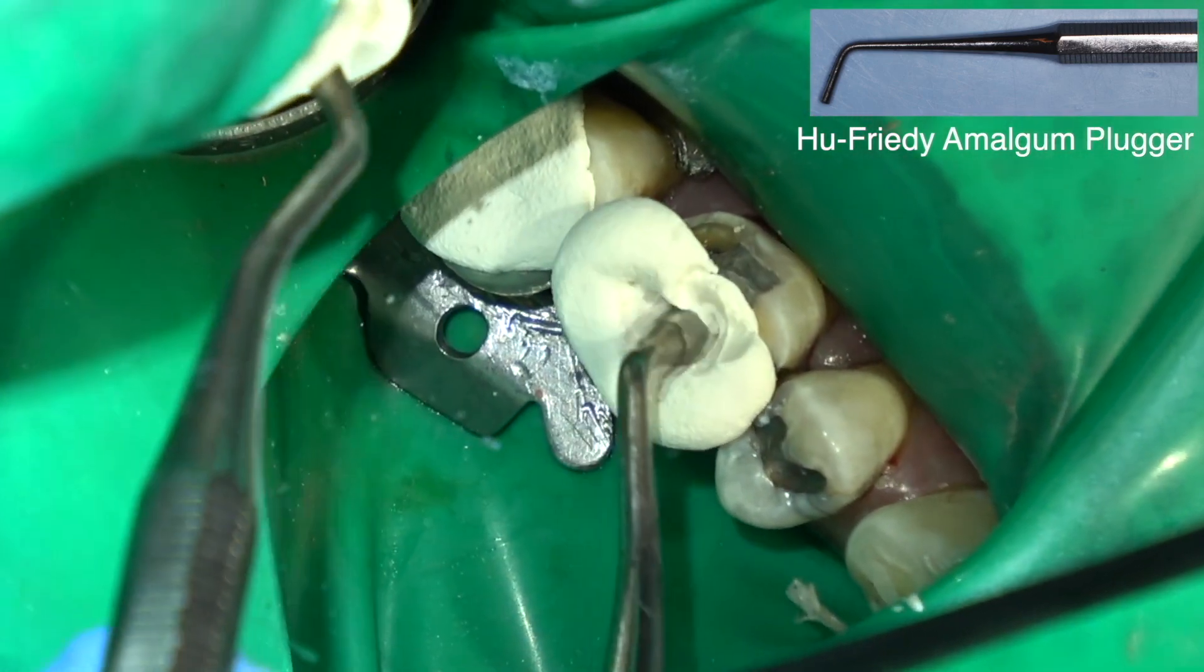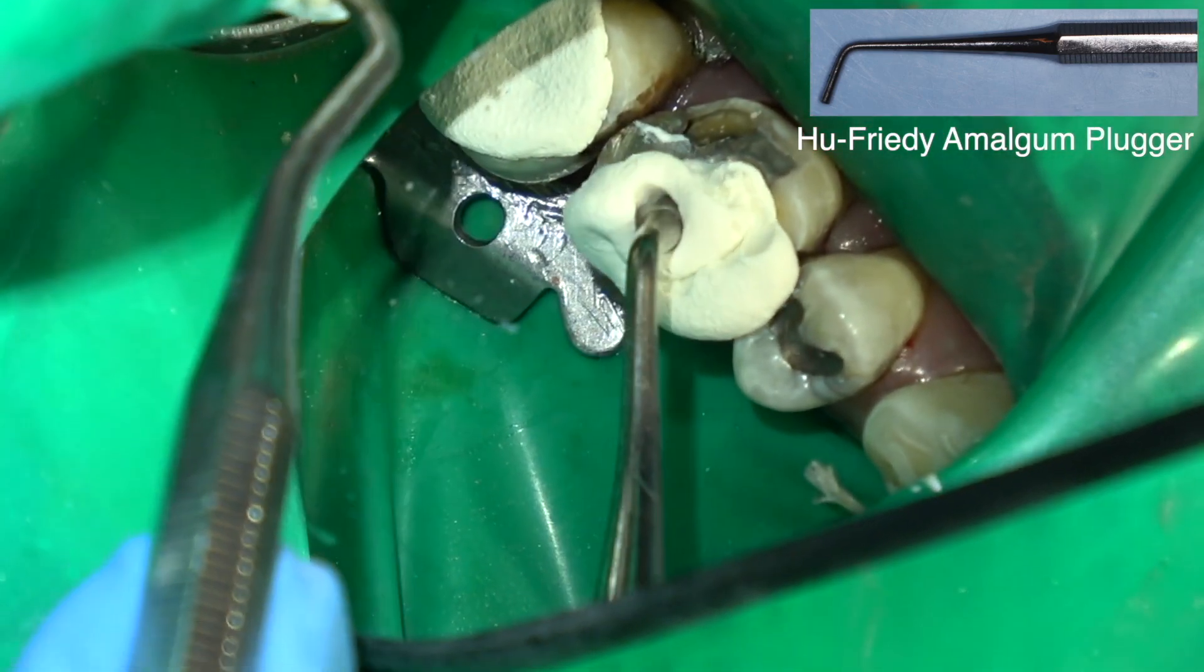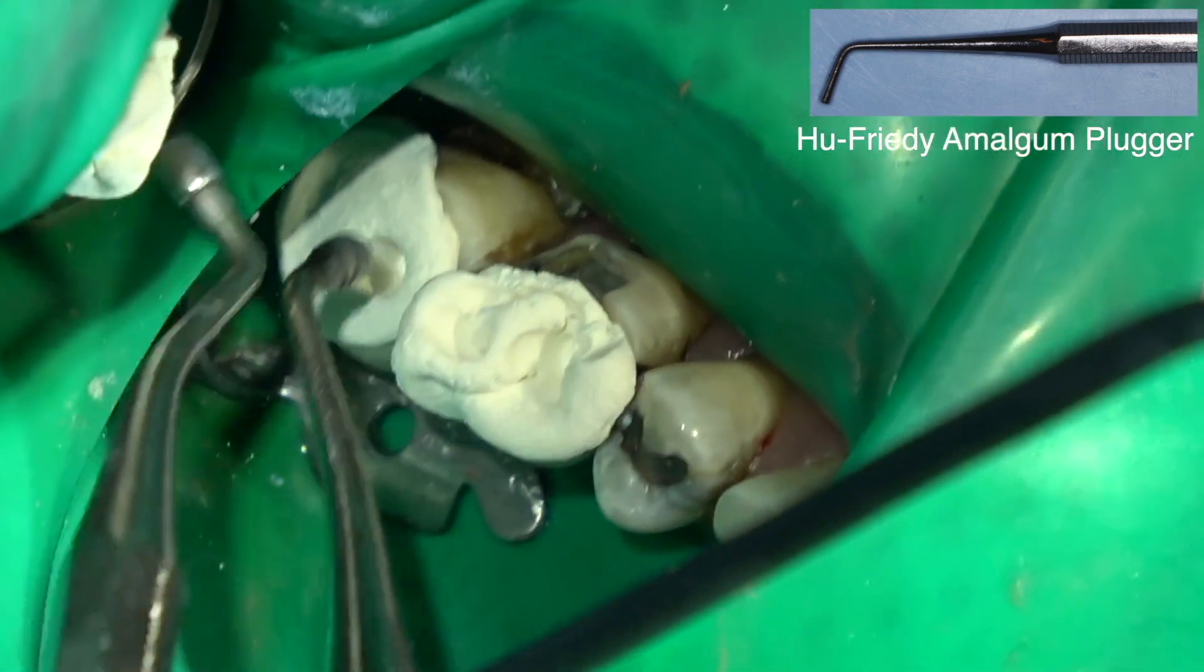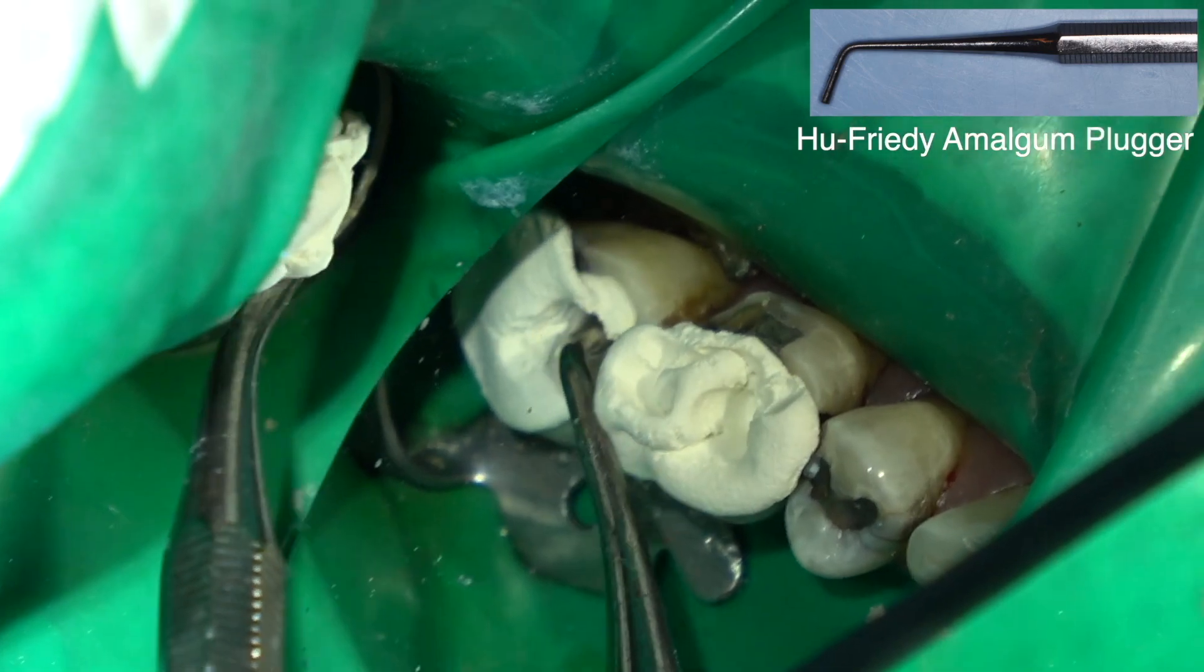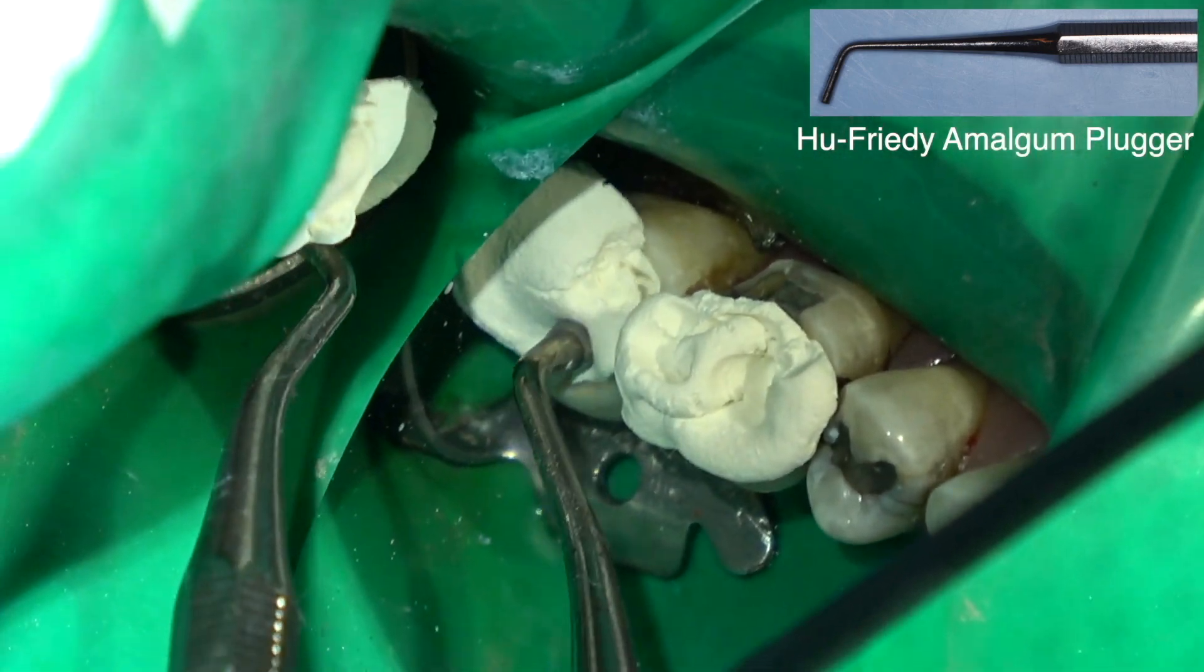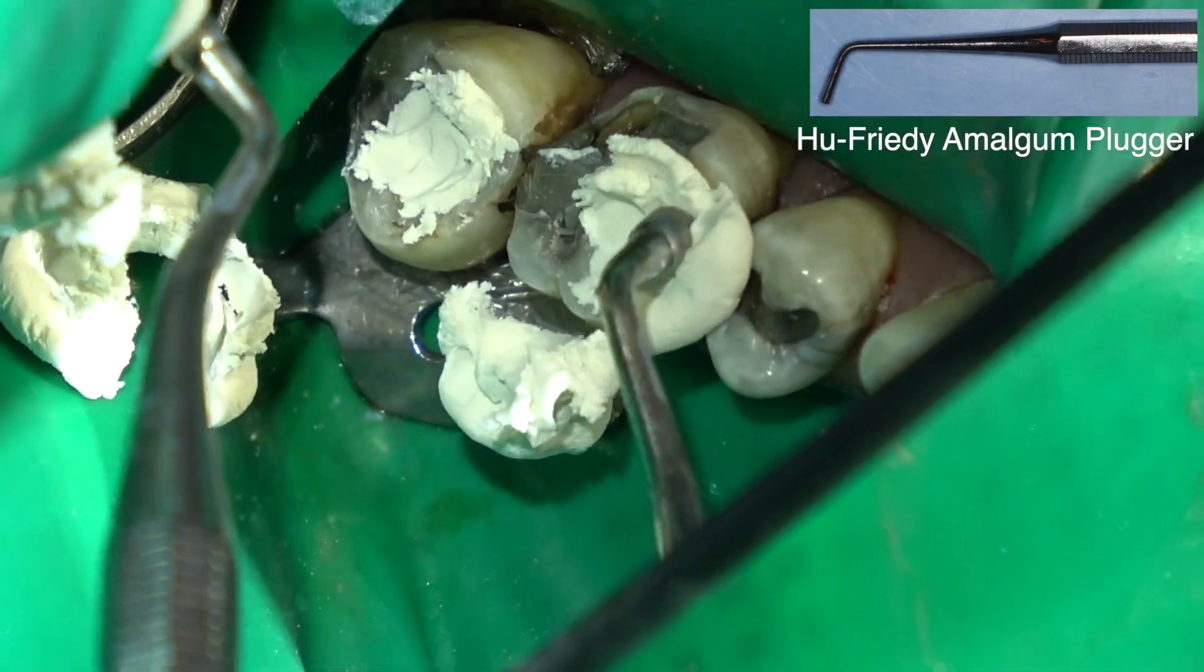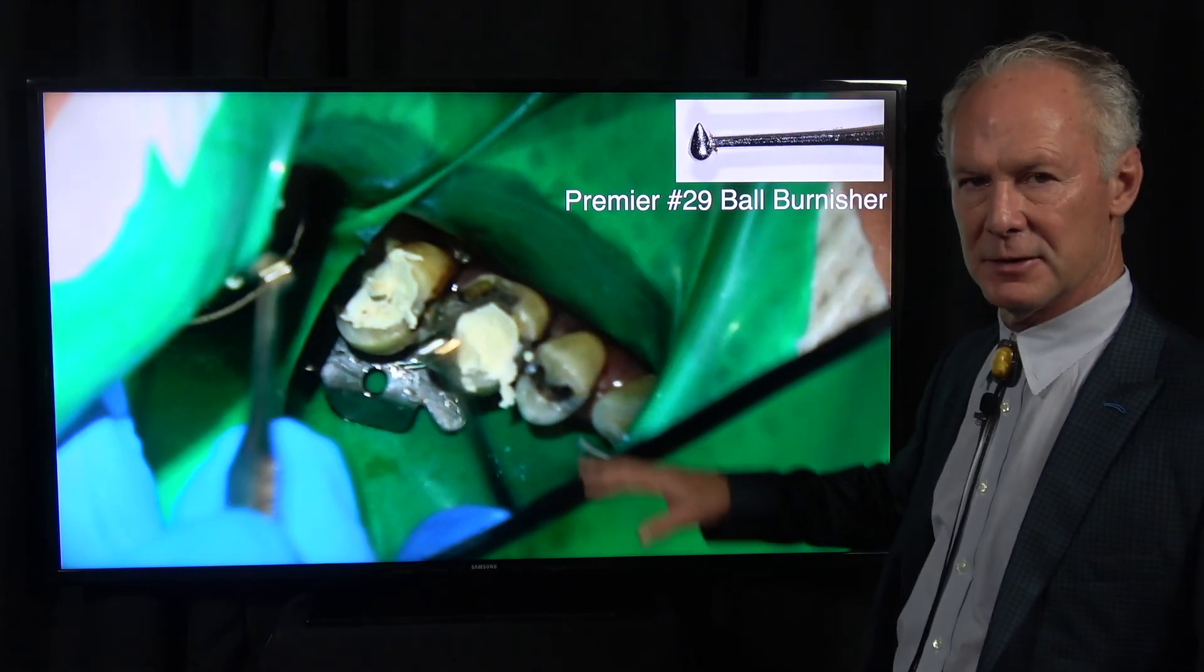Some people say, well, IRM will affect the set of composite, the composite cement, or composite restoration. I've never had an issue with that in 40 years of using it because I'm sure it's set all the way before I place composite near it, including composite cement.